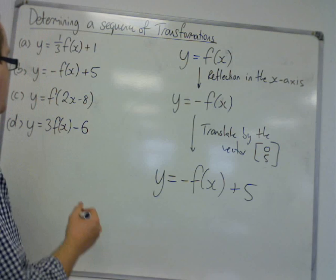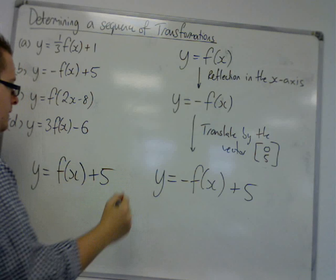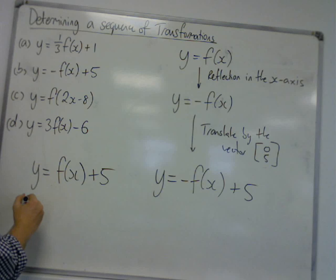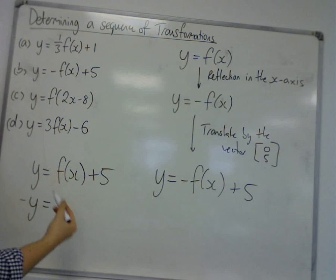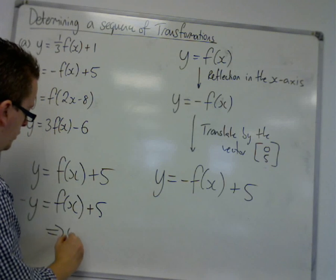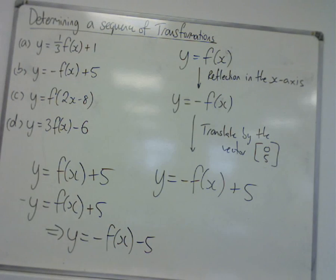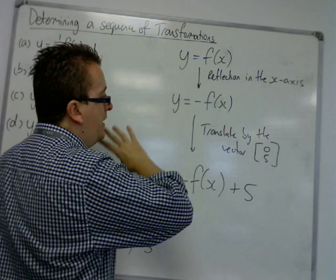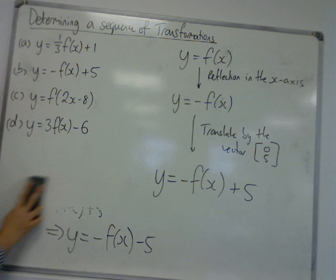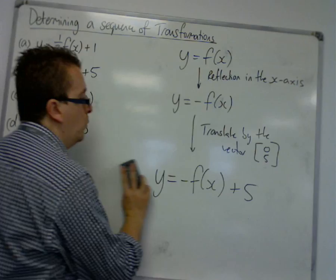If you'd done it the other way around, the translation would first have made you arrive here. And then, reflecting in the x-axis, changes all of the y's. So, y gets replaced with minus y. So, you would have had y is equal to minus f of x minus 5. So, it would have done it in the incorrect way. So, be wary. It's always good to just, when practicing, to check back to see what would have happened the other way around.